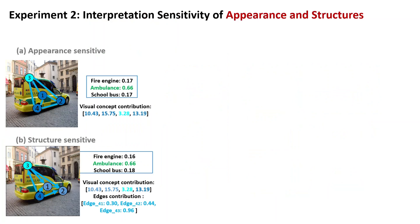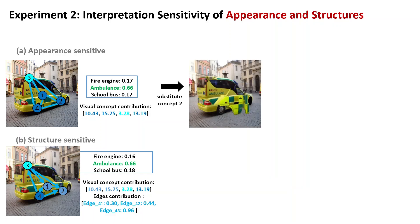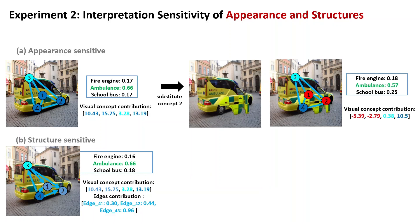The second experiment shows the interpretation sensitivity of appearance and structure. We first substitute a relatively good concept patch with positive contribution score with a relatively bad concept patch with negative contribution score. VRX can precisely locate the modification and give correct explanation.